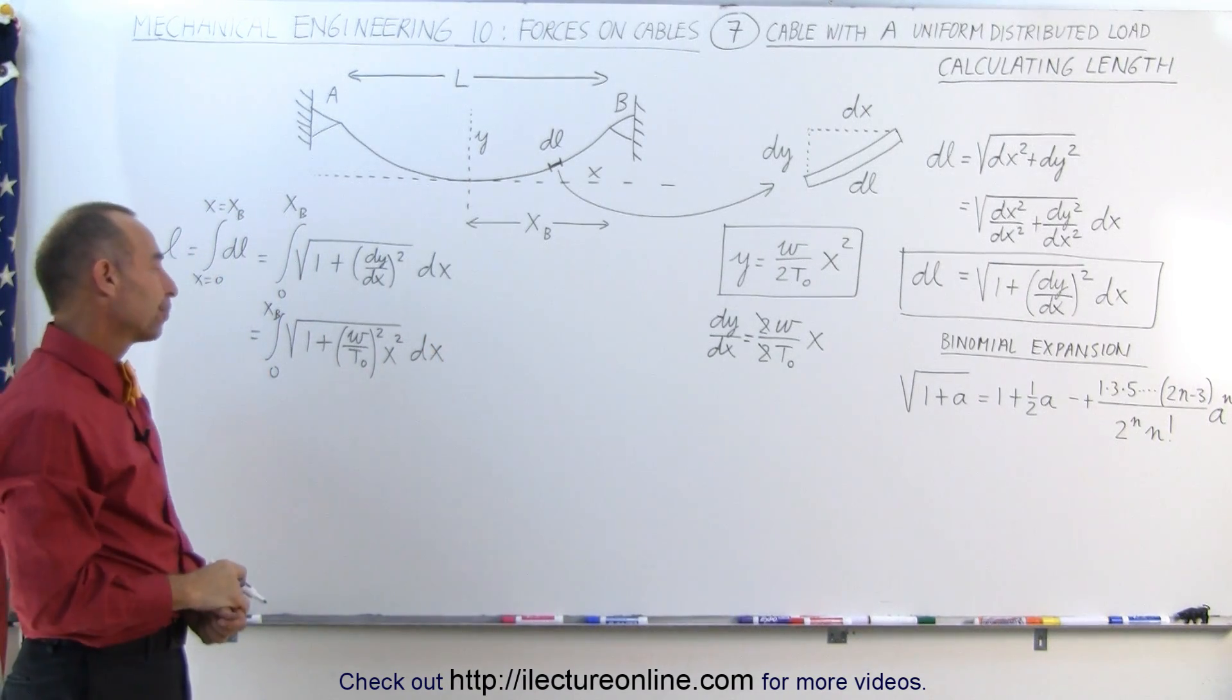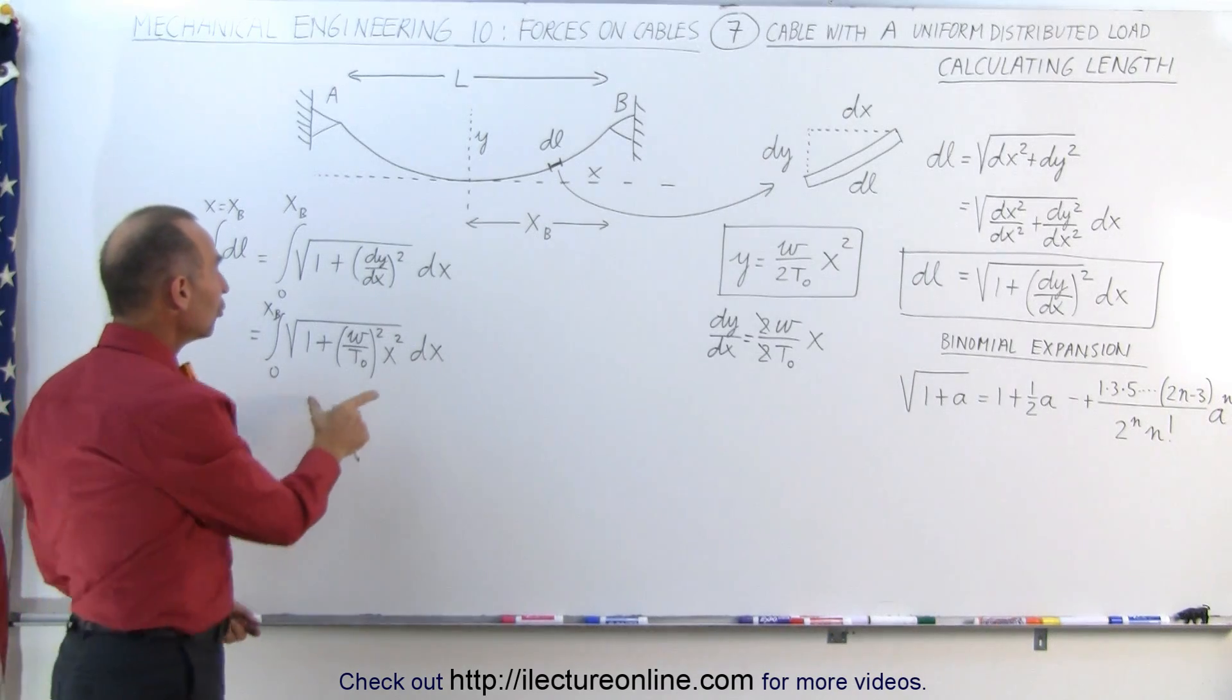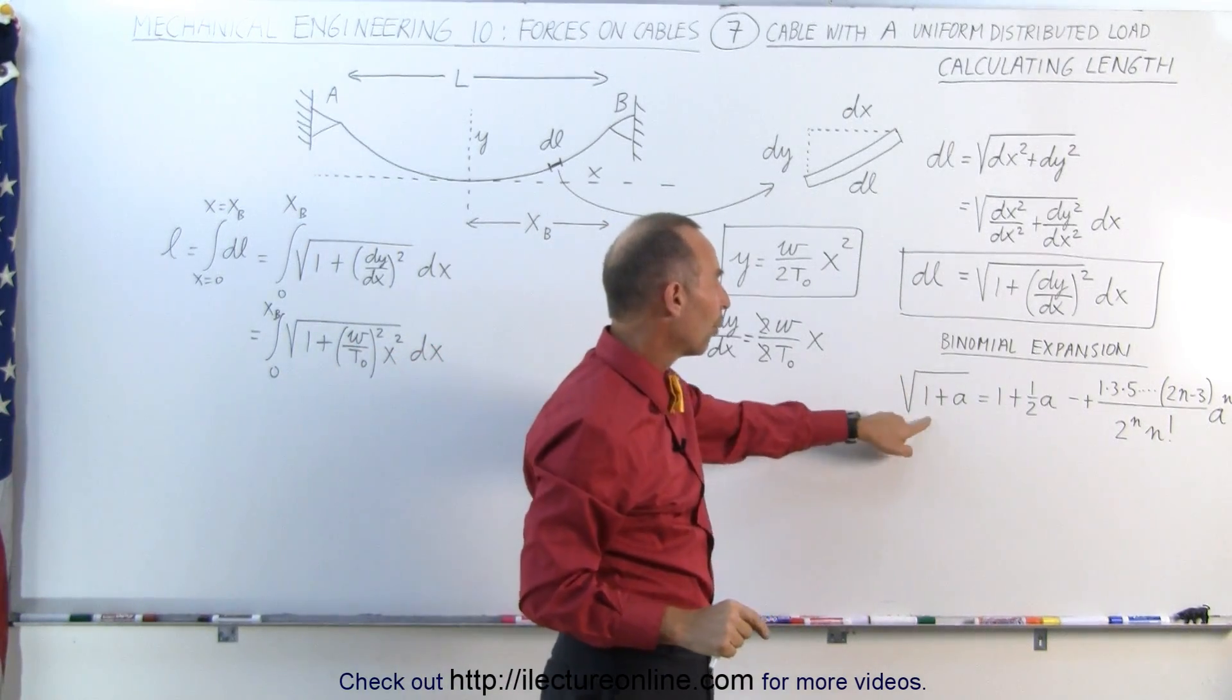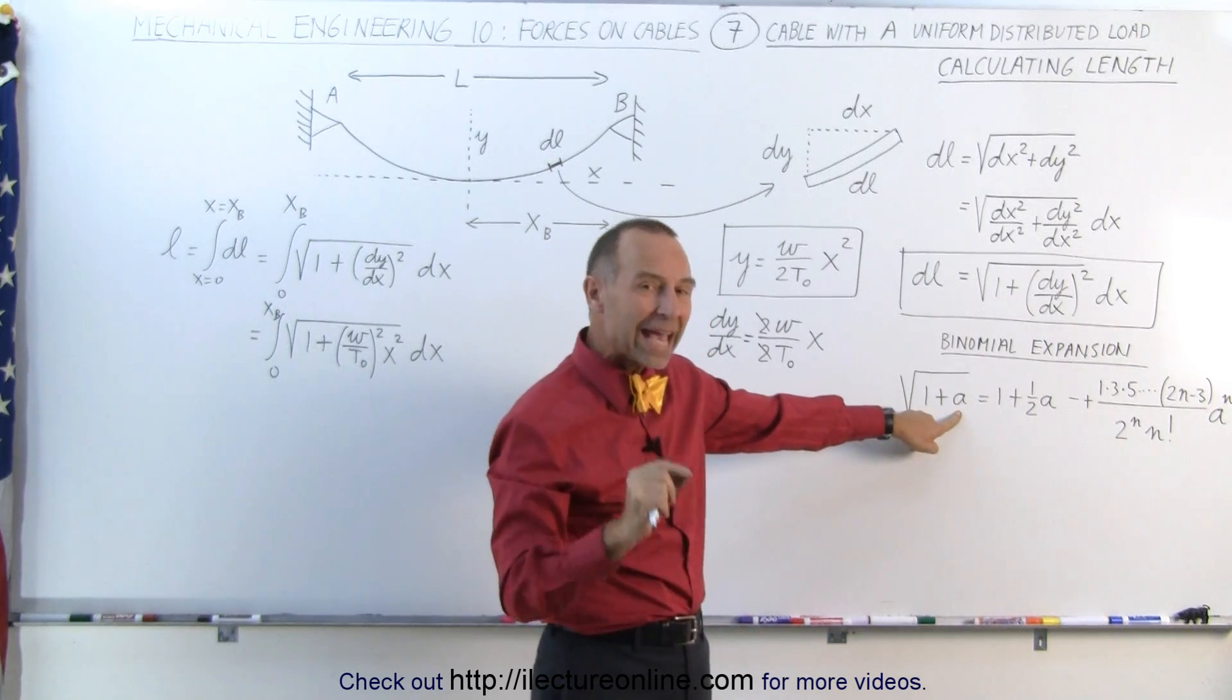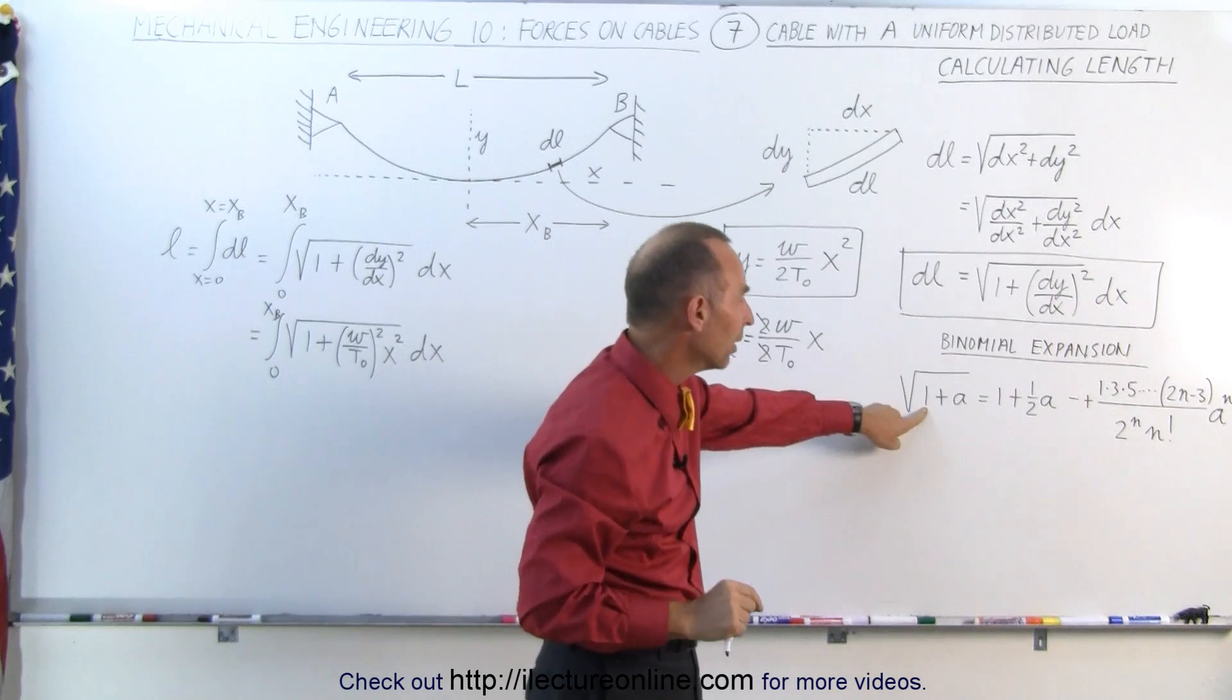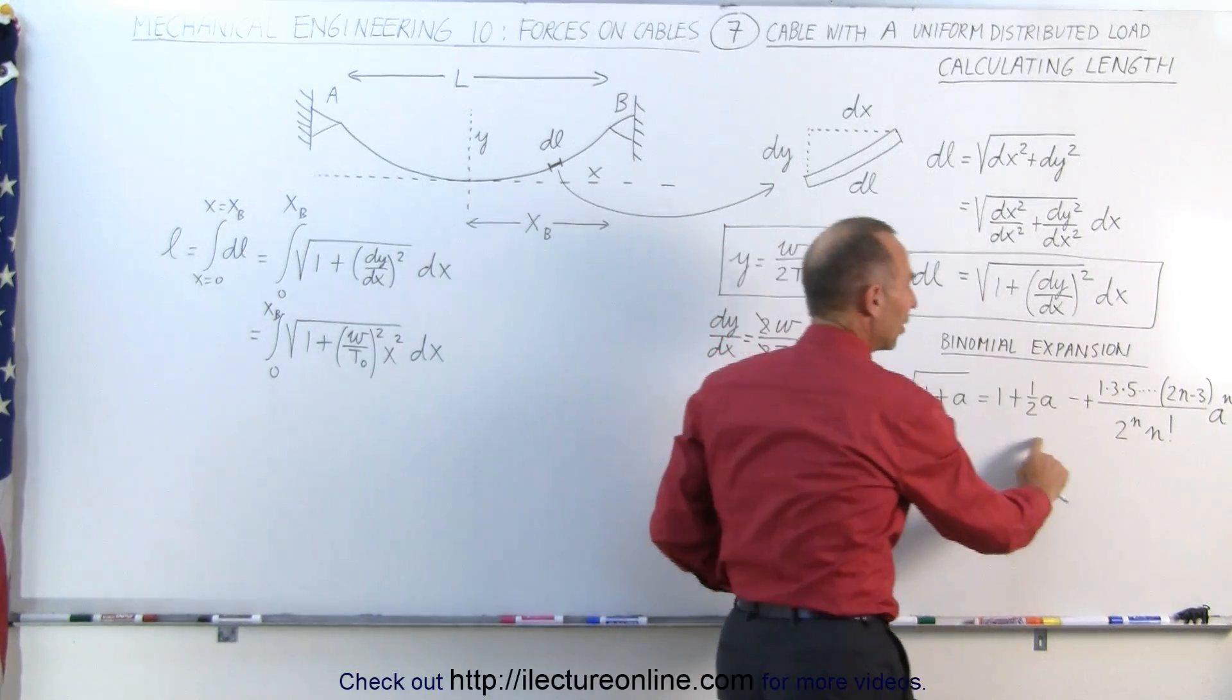But how do we integrate that? Well, it turns out we can actually use the binomial expansion now, and here we have an example of that: the square root of 1 plus a, as long as a is a small number relative to 1, so a has to be much smaller than 1, and it can be written as this.